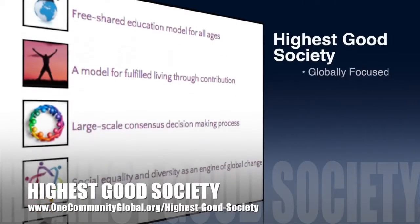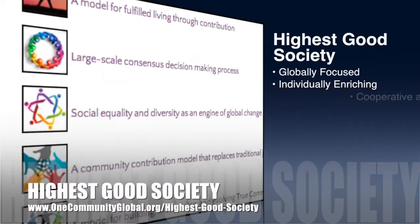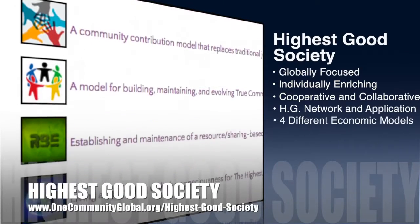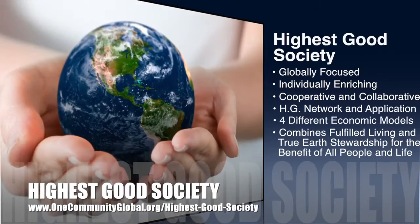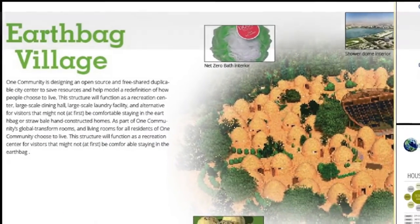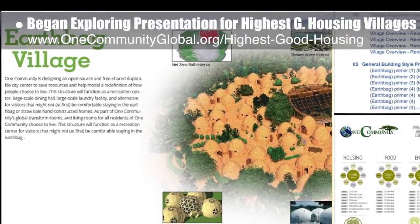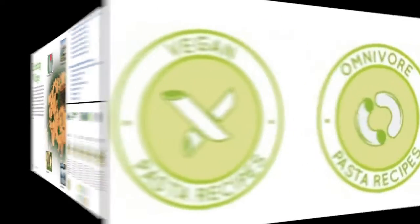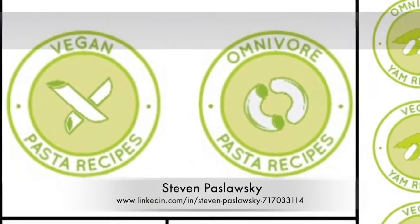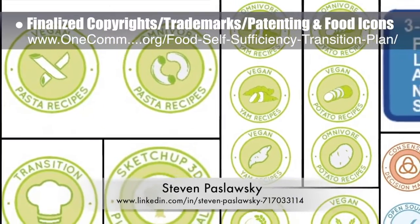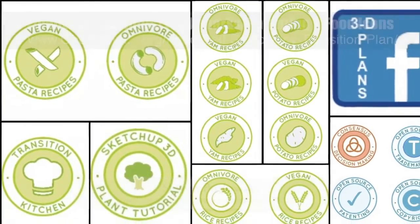One Community's approach to highest good society is globally focused, individually enriching, cooperative and collaborative. It includes a highest good network and application, four different economic models, and combines fulfilled living and true earth stewardship for the benefit of all people and all life on this planet. This week the core team began exploring how to create an open source and standardized presentation for highest good housing villages. Steven Paslowski, graphic designer, also finalized the icons for our open source copyrights, trademarks, and patenting pages, the food self-sufficiency plan and page, and fixed the last icon needed from the social media set.